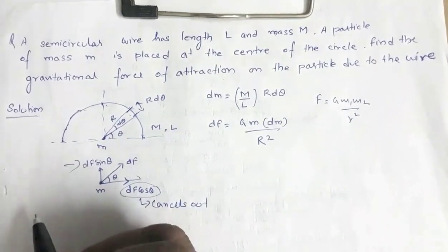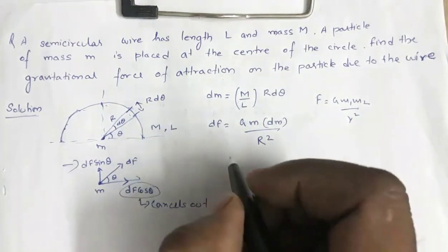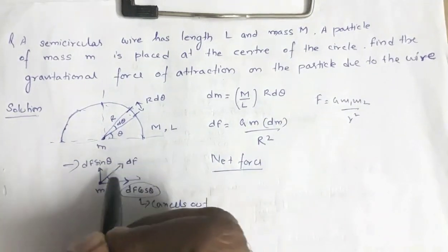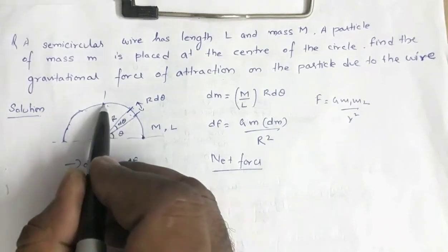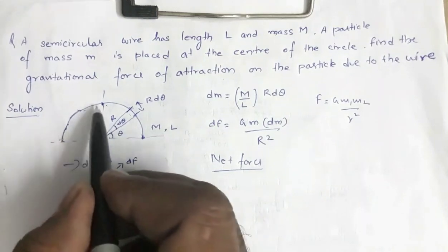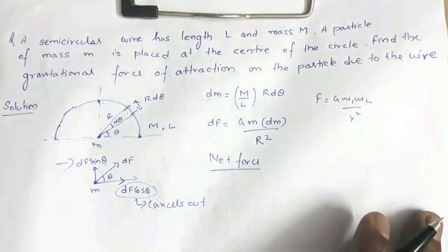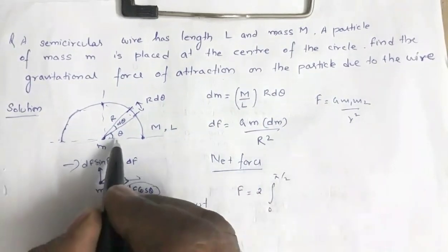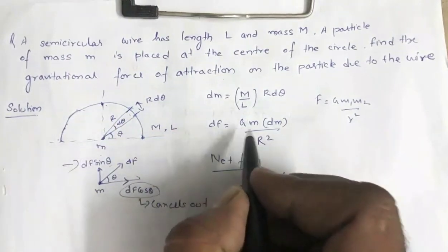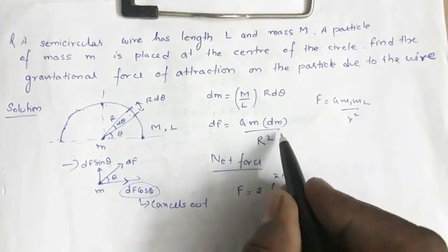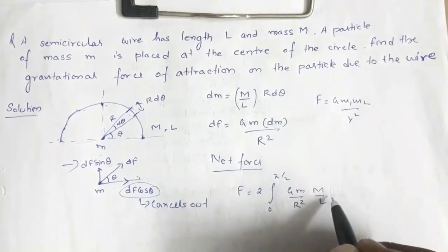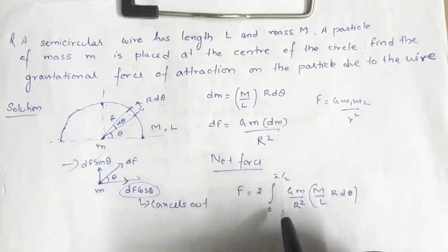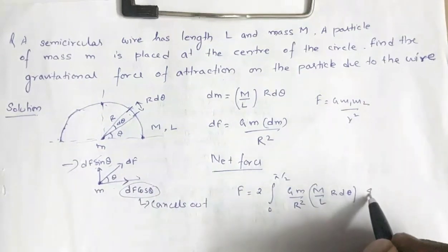So the resultant force is due to the dF·sin θ component only. To get the net force, we add the dF·sin θ component from 0 to π/2 and multiply by 2, because the other half gives identical contributions. So net force F = 2 × ∫₀^(π/2) [G·M/R² · (M/L)·R dθ] · sin θ.